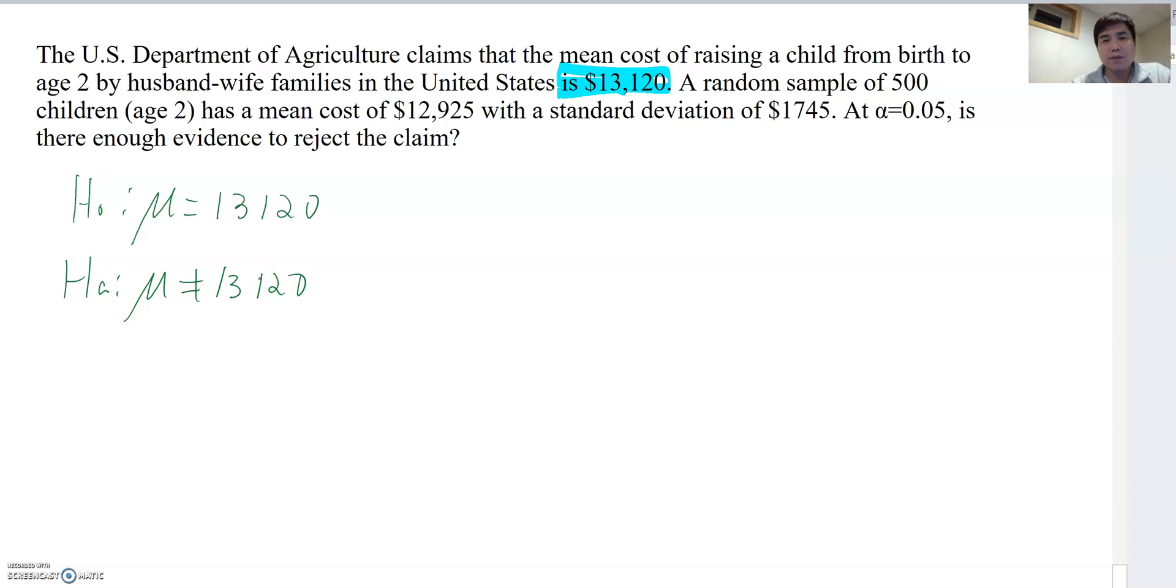Because this time, the hypothesis testing doesn't show the direction. So we just make equal or not equal. And then there will be their claim.